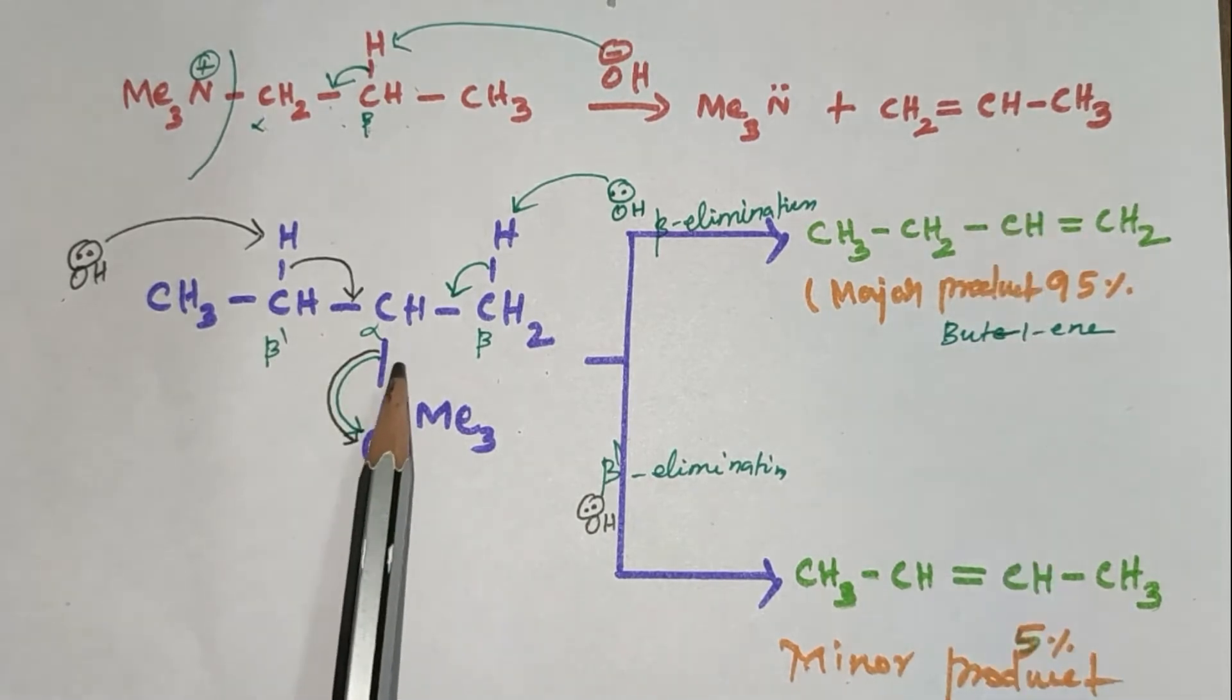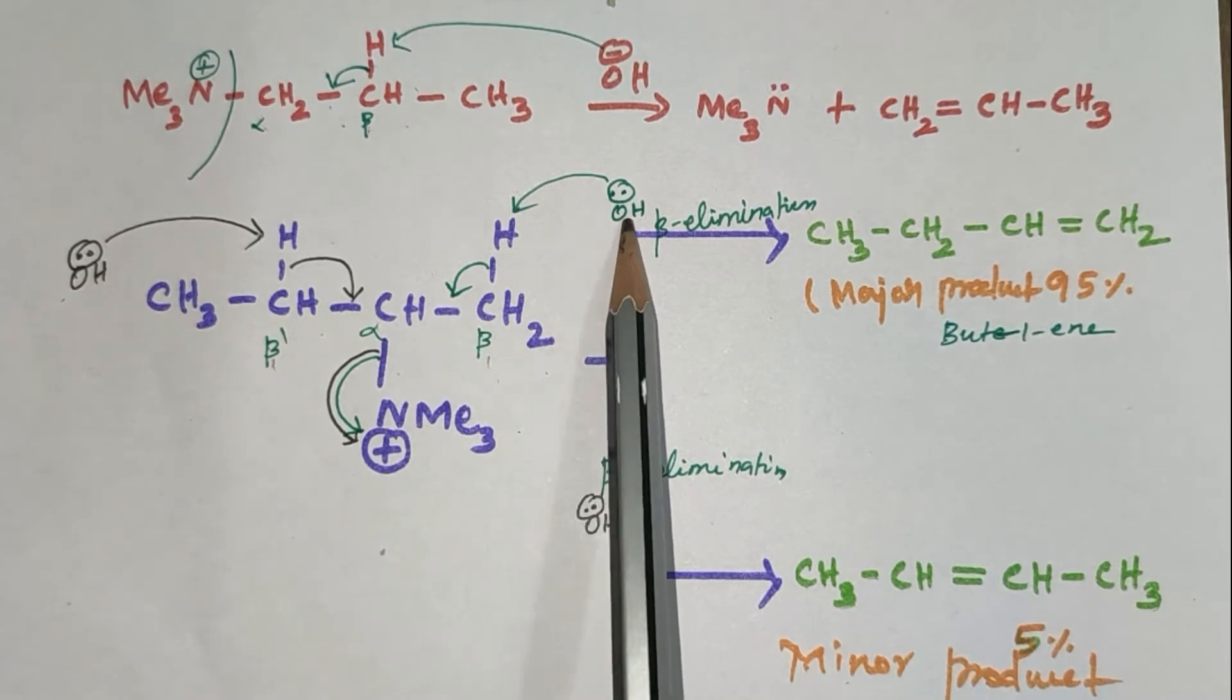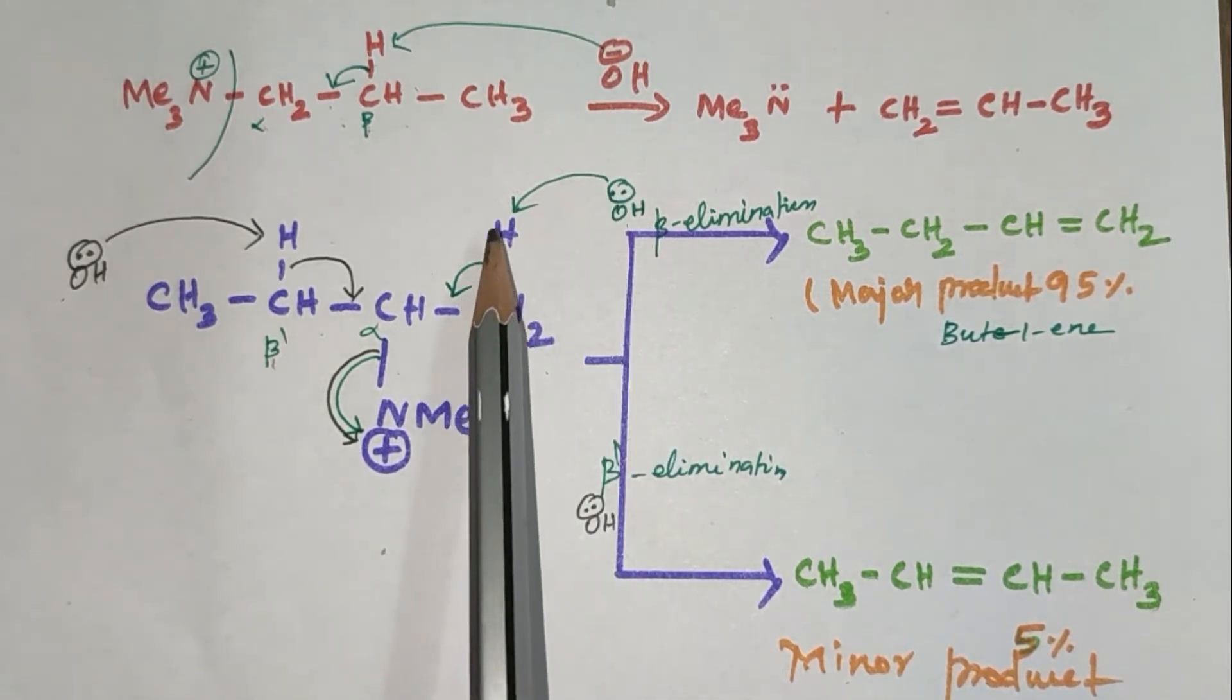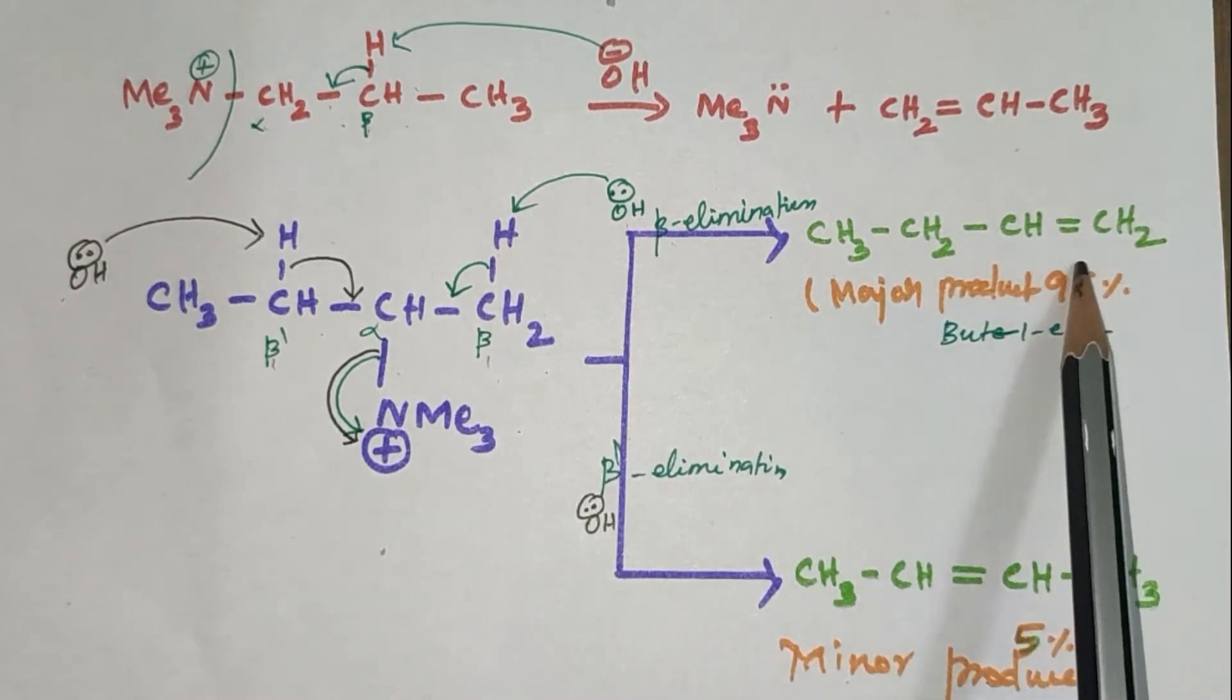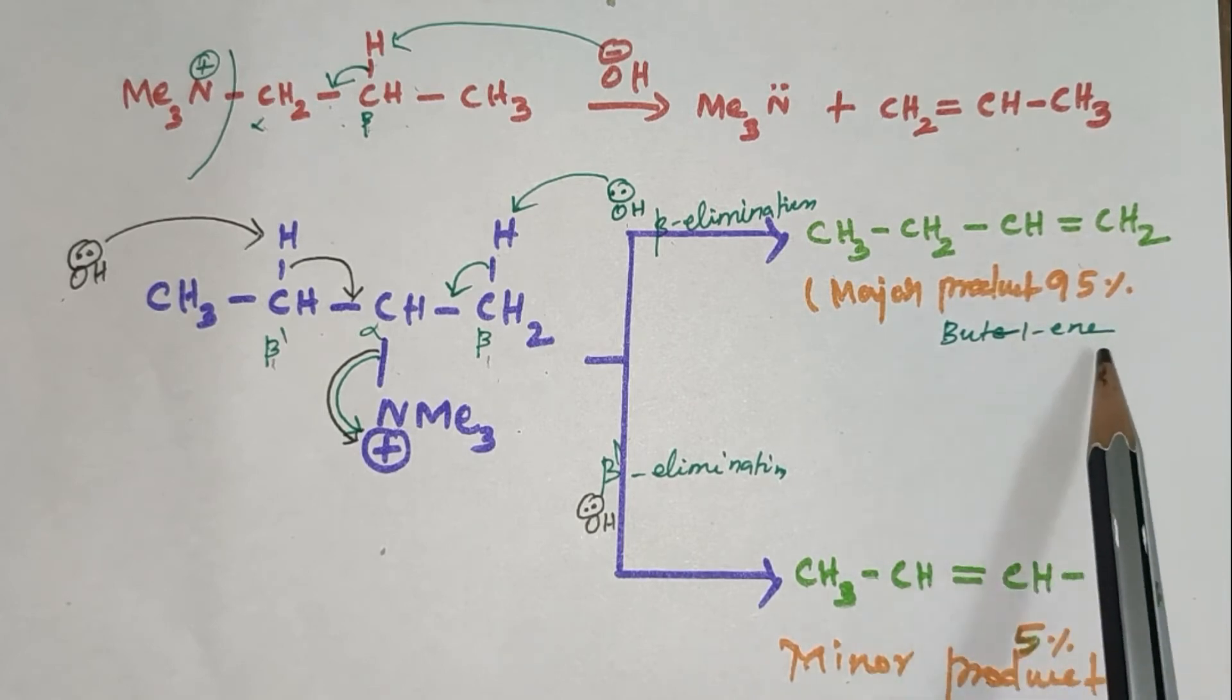In this example, this is beta carbon, this carbon is the beta dash. Hofmann rule is also a beta elimination reaction. In the presence of a base, this OH- abstracts a proton. This beta hydrogen will be eliminated. We get an alkene. This alkene is the major product, 95% but-1-ene.